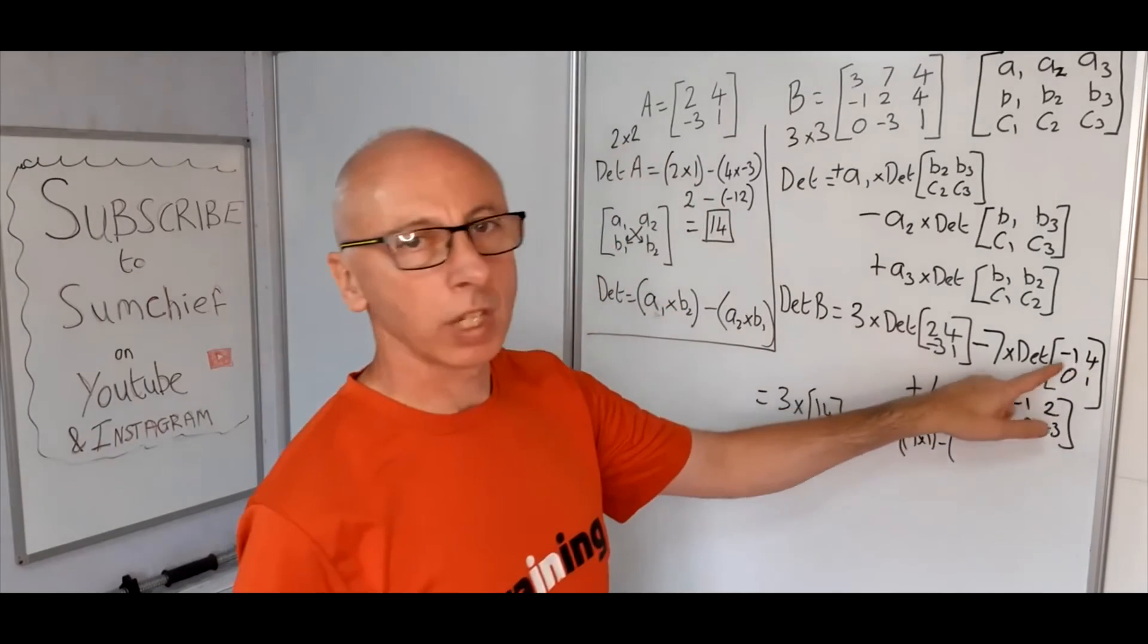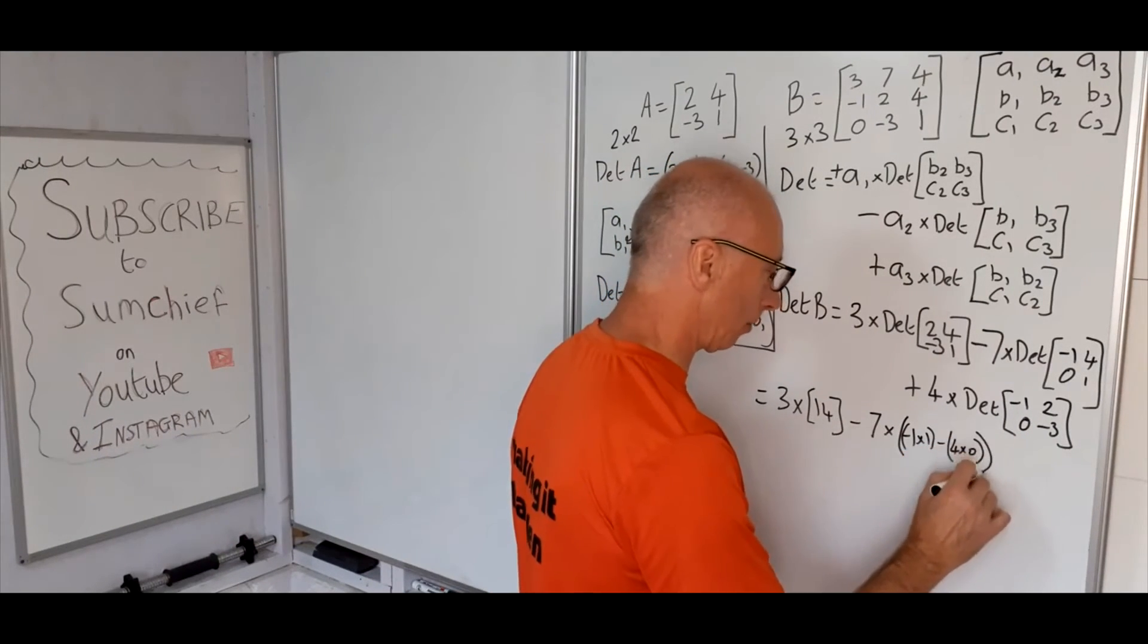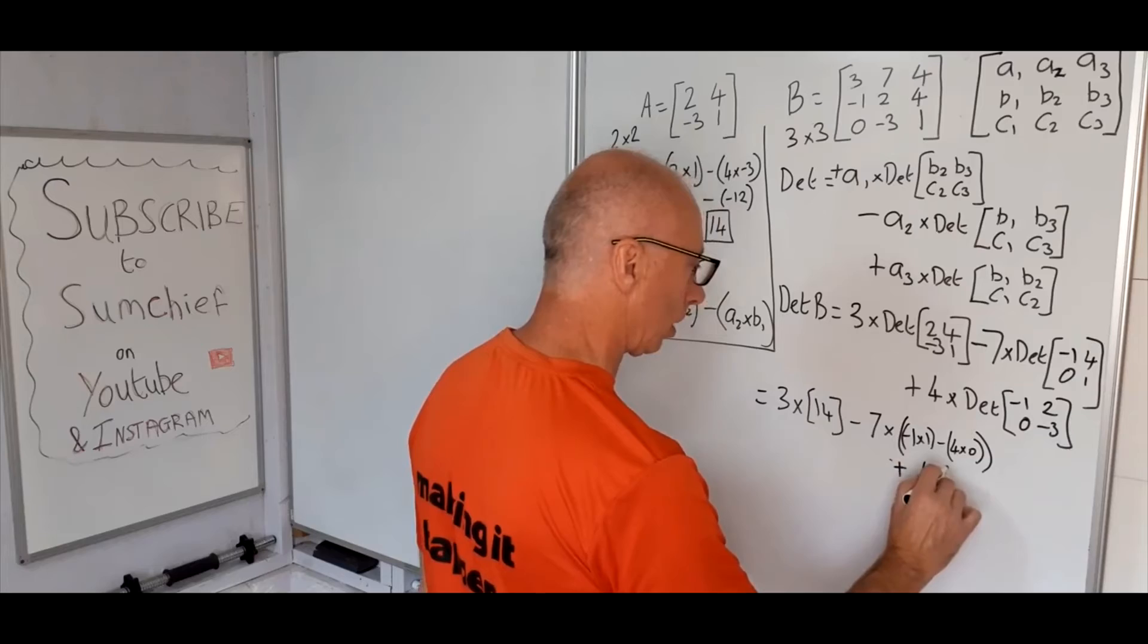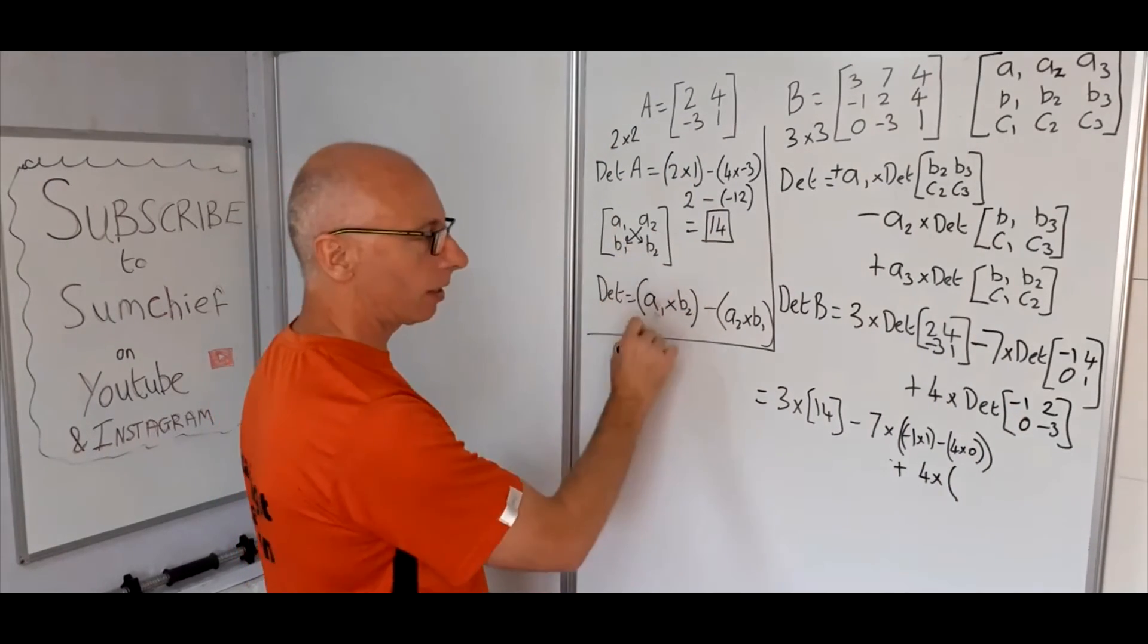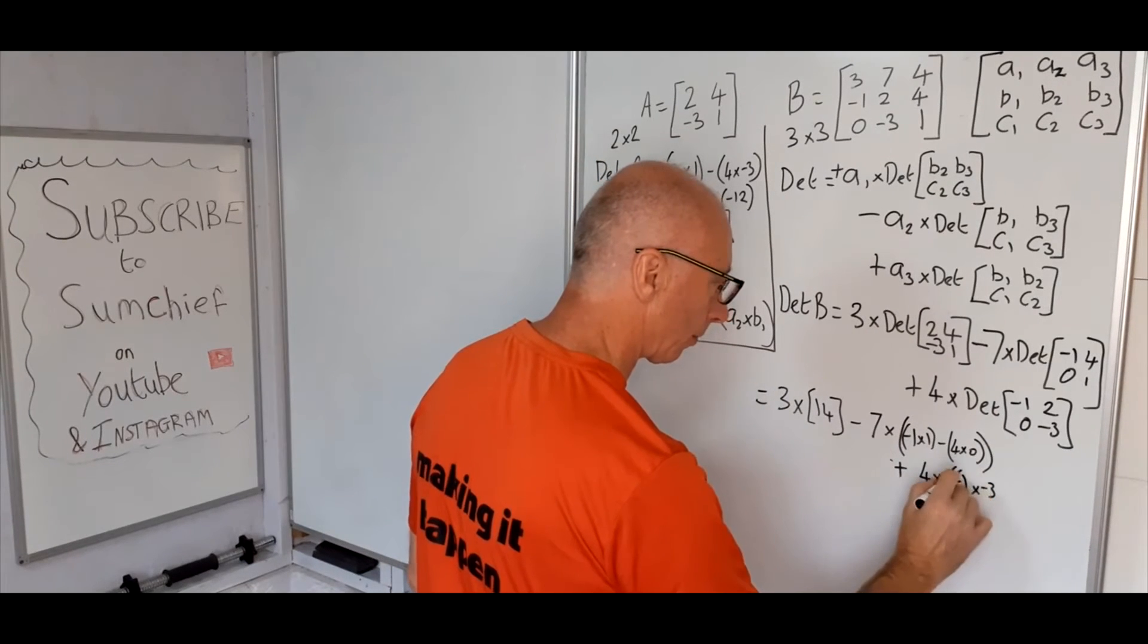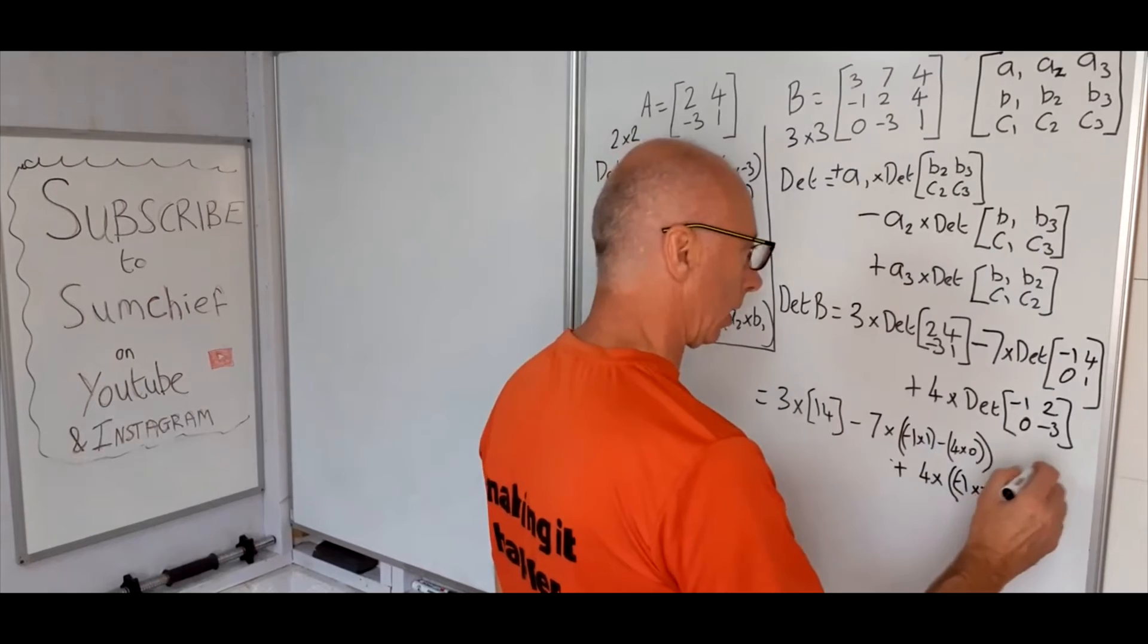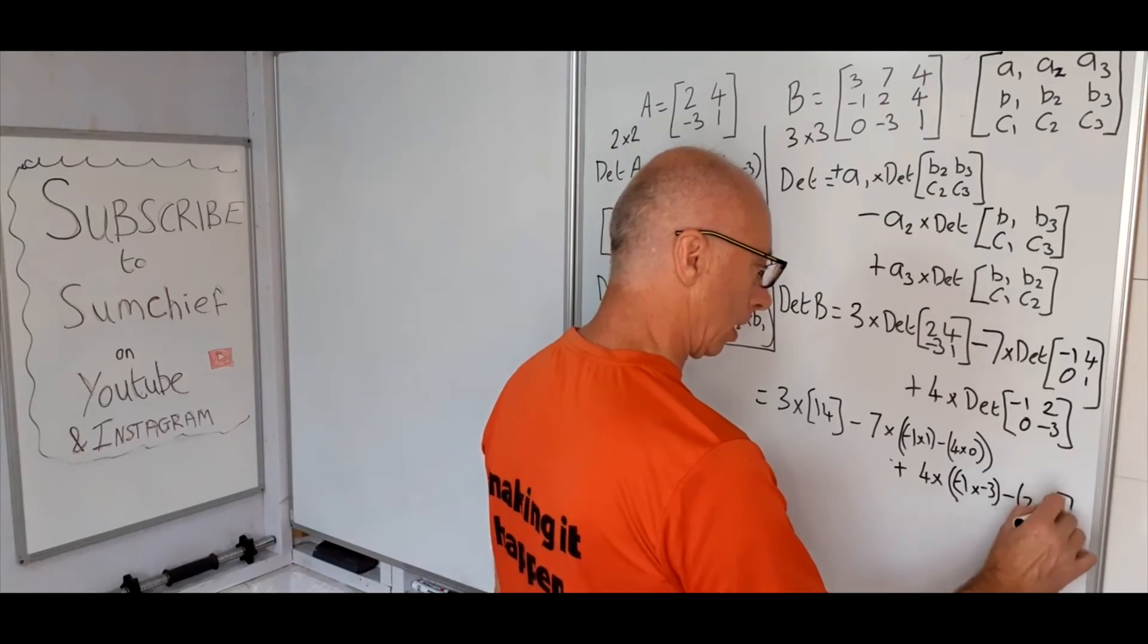Minus 4 times 0. 4 times 0 is 0. I'll just write 4 times 0 in there so you can see it. And then add 4 times, again using the cross method like this. So these two multiply together. Minus 1 times minus 3, minus 2 times 0. Okay, 2 times 0, which is going to be 0.